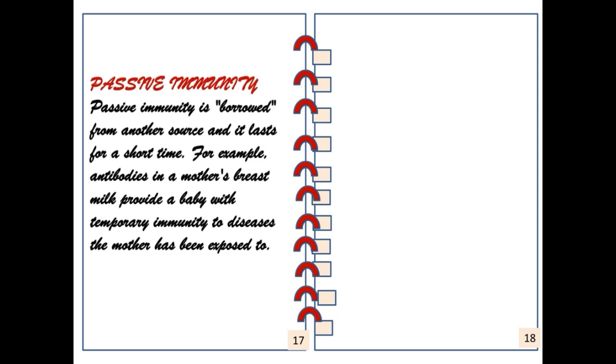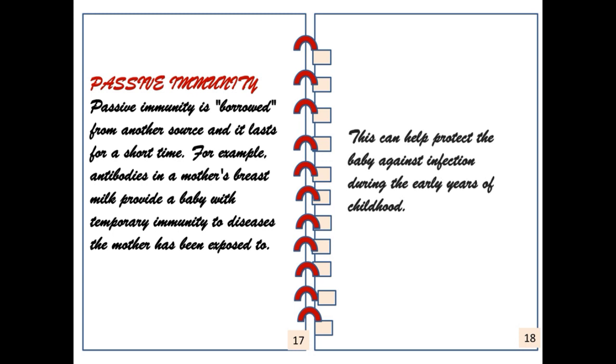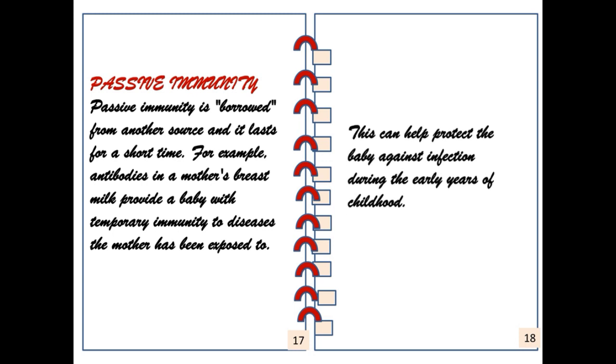Passive immunity is borrowed from another source and it lasts for a short time. For example, antibodies in the mother's milk provide a baby with temporary immunity to diseases the mother has been exposed to. This can help protect the baby against infection during the early years of childhood.